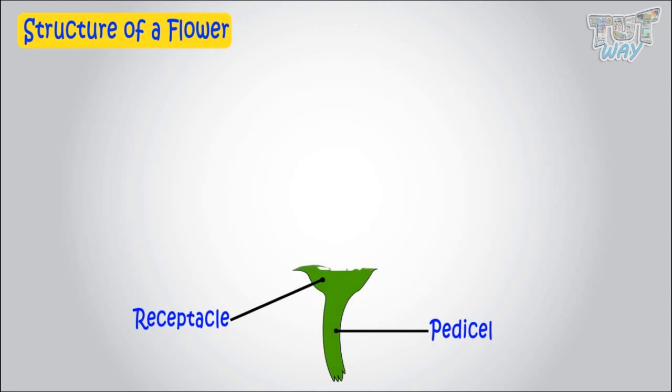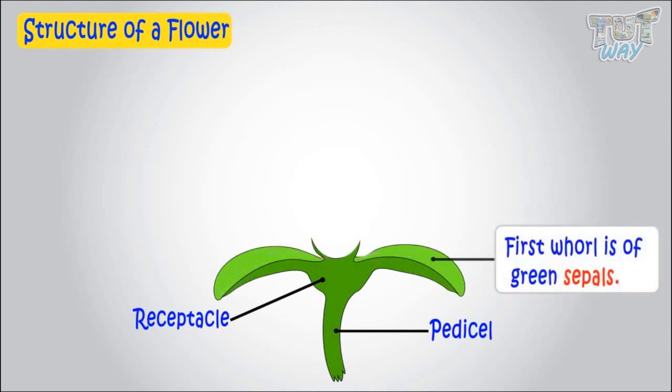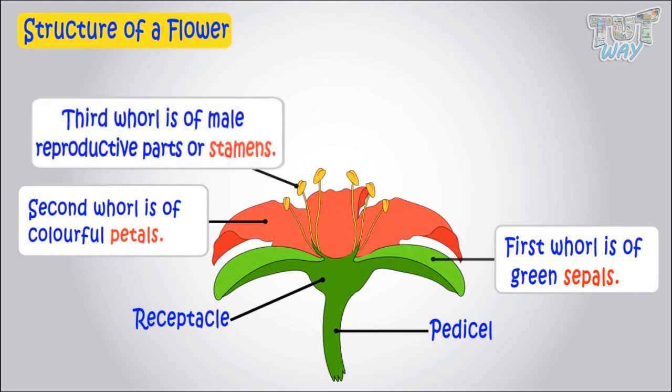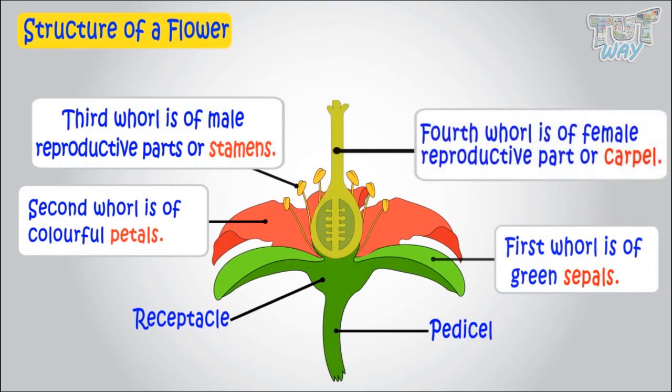First whorl is of sepals. Second whorl is of petals. Third whorl of male reproductive parts. Fourth whorl of female reproductive parts. Let's learn each of them one by one.